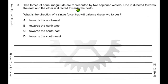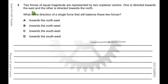In the next question, there are two forces of equal magnitude represented by two coplanar vectors — coplanar means on two dimensions. One is directed towards the east and the other towards the north. I've drawn a line pointing east representing the first vector, then drawn the same length in the north direction for the second vector, since they have equal magnitude.